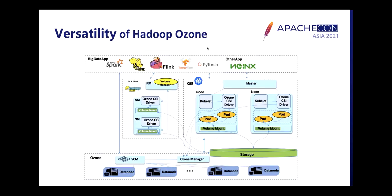Ozone aims to be a versatile storage solution with many use cases in EMR and Kubernetes environments. There are many deployment methods available, making it easy for EMR and Kubernetes users to deploy an Ozone cluster.